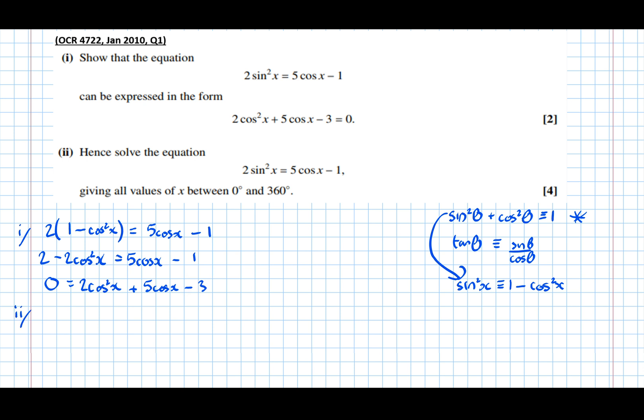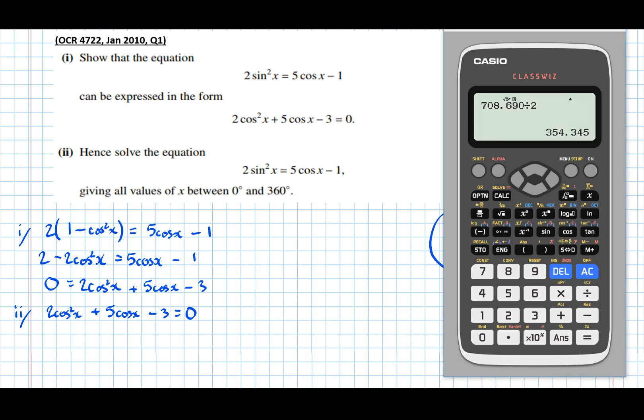So part 2, hence solve the equation. Well notice that this is the exact same equation I started with, so actually I've simplified it a little bit. I've turned it into a hidden quadratic with 2 cos squared x plus 5 cos x minus 3 equals 0. So that's a quadratic equation in cos x, sort of a hidden quadratic. So what we can do now, we can go to our quadratic solver.